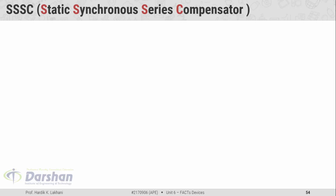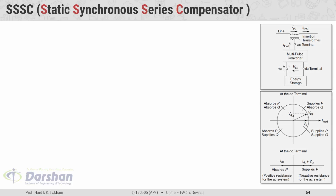SSSC is Static Synchronous Series Compensator, sometimes also called S3C. This is the line diagram of SSSC and below that the power exchange diagram is shown. In the construction of SSSC, a Multiples Converter is used along with an Energy Storage Component. This SSSC is connected to the power system with the help of a Coupling Transformer, and this compensator is connected in series with the line. That is the major difference between the STATCOM and the SSSC — the STATCOM is normally connected in shunt manner, but this compensator is connected in series manner.